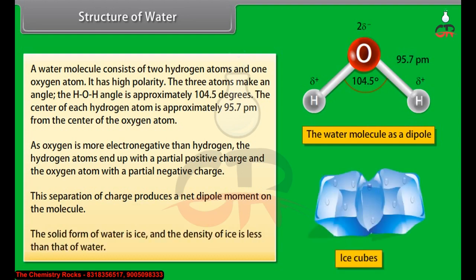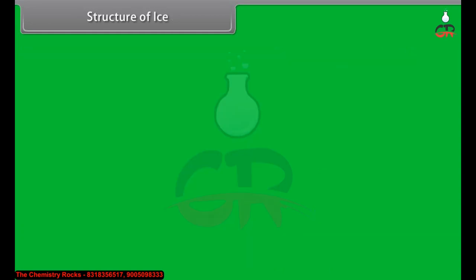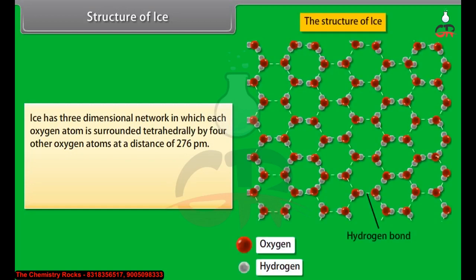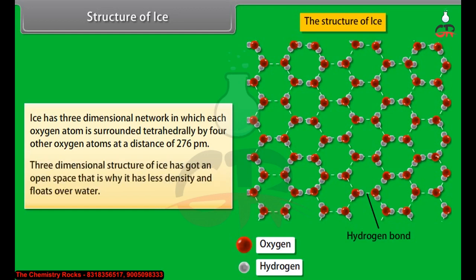The solid form of water is ice, and the density of ice is less than that of water. Ice has a three-dimensional network in which each oxygen atom is surrounded tetrahedrally by four other oxygen atoms at a distance of 276 picometer. The three-dimensional structure of ice has got an open space - that is why it has less density and floats over water.